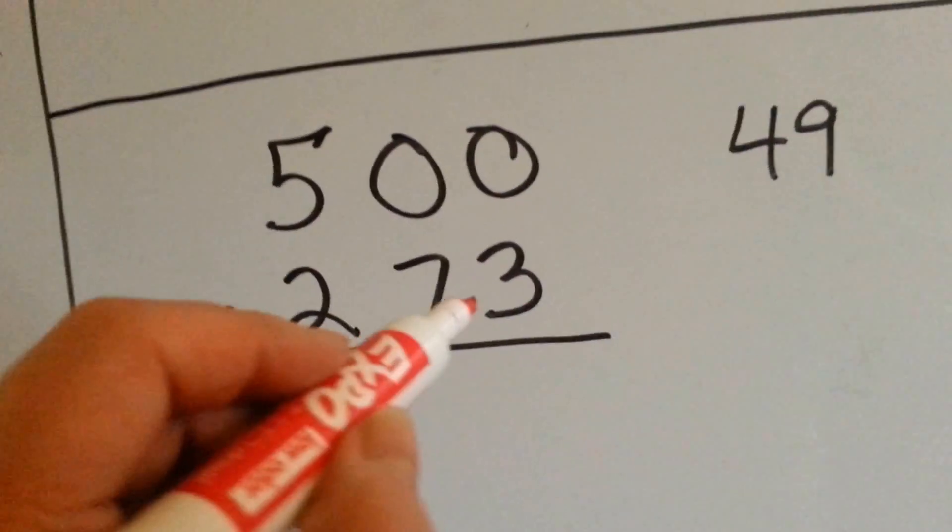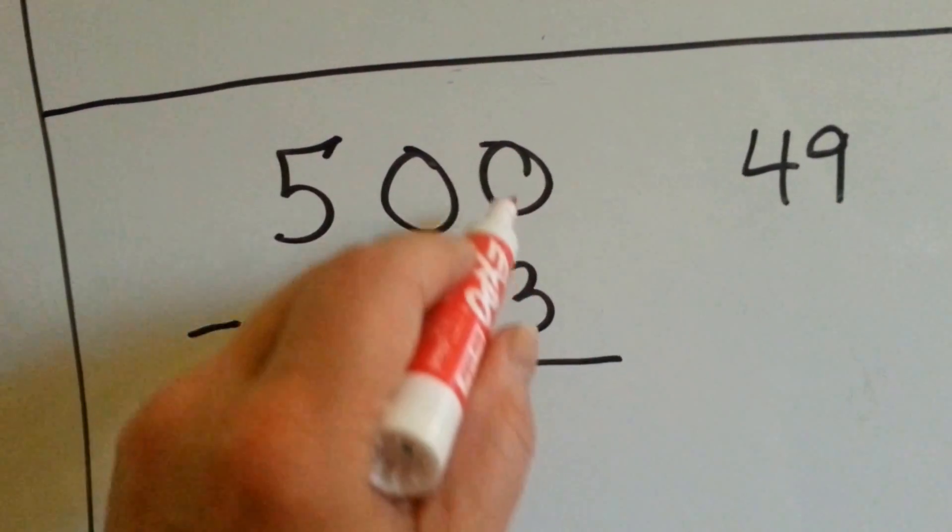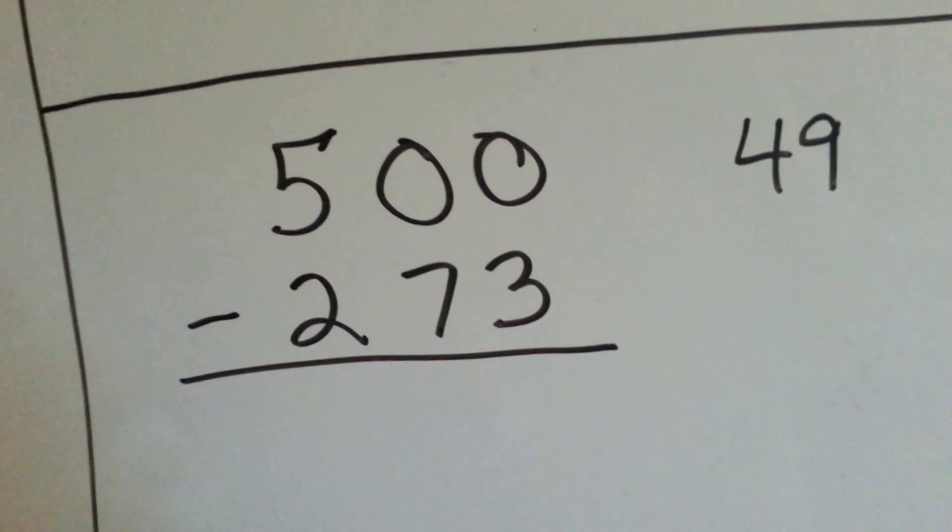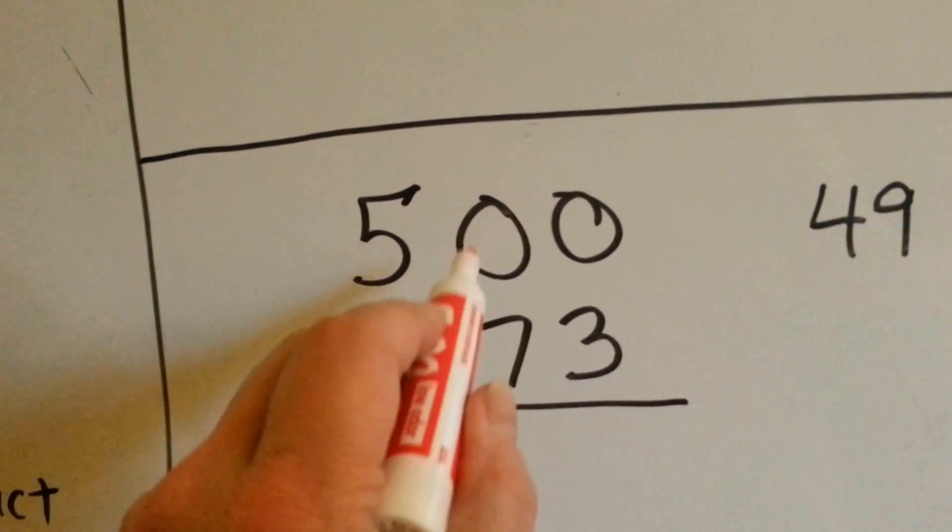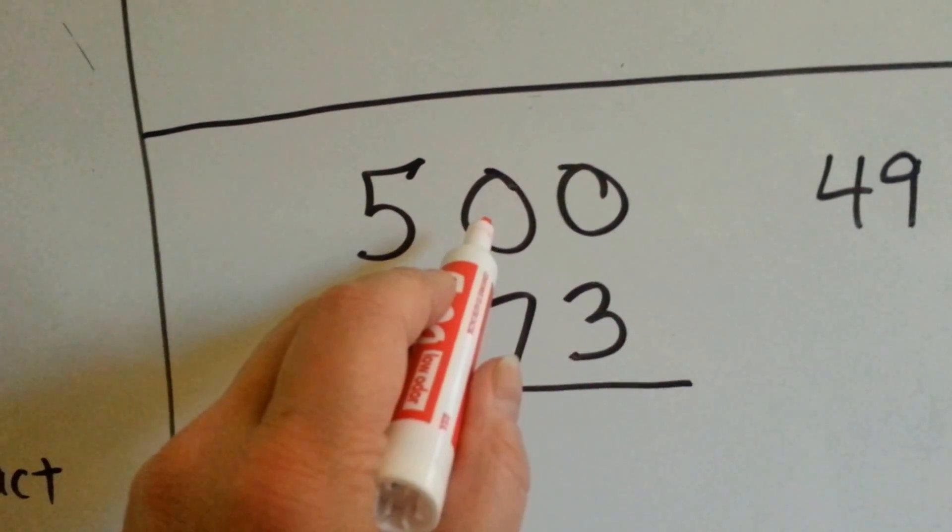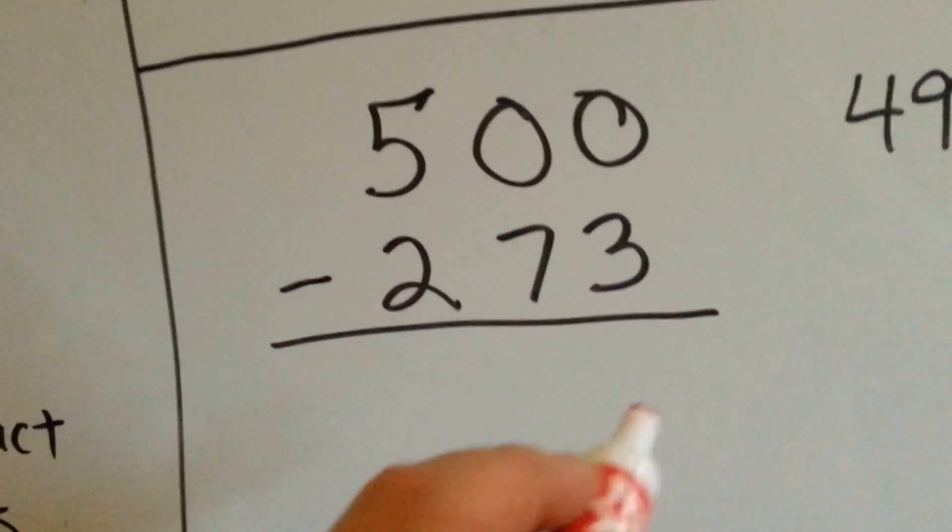This is a special one. We've got 3, and we need to take it from 0. But the thing is, we've got another 0 here, so what do we do? We'd have to take it from the 5. The quickest way to do it,